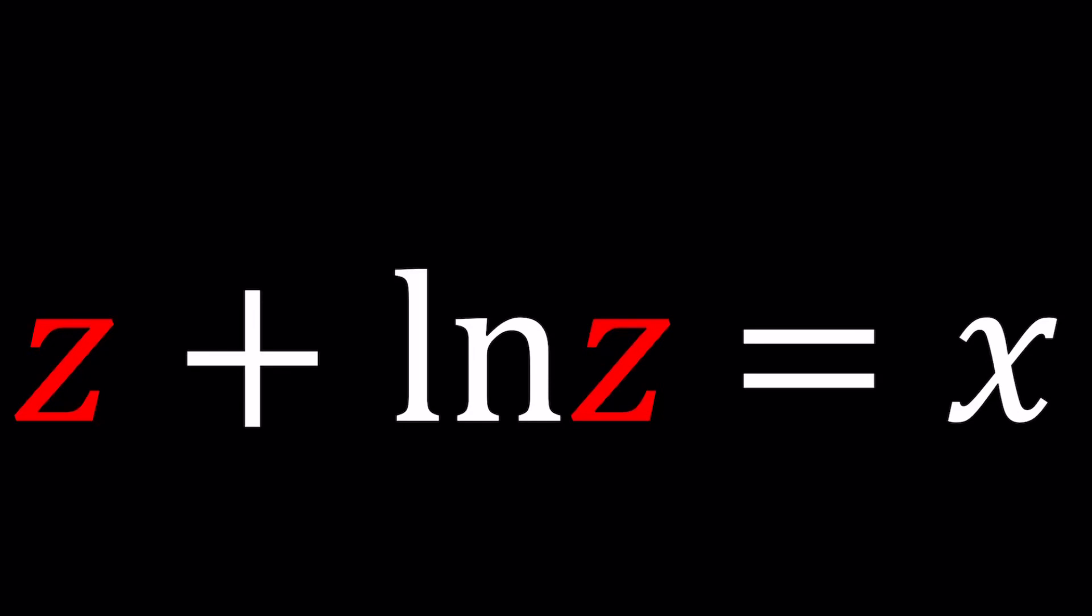Hello everyone, welcome to A plus B I. This channel is all about complex numbers, and in this video, we're going to be solving an interesting equation: z plus ln z equals x, and we're going to be solving for z. That's why z is red.